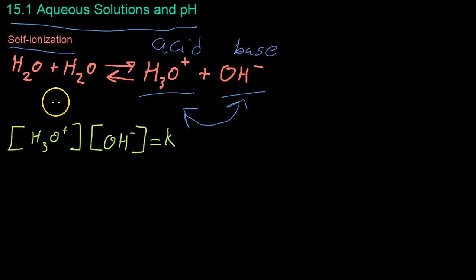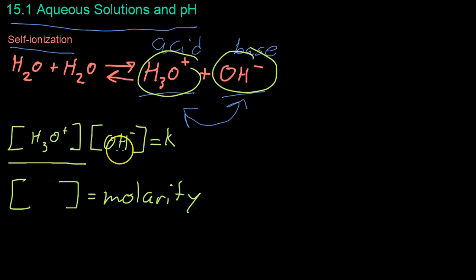Because of this process of self-ionization, there are natural concentrations of hydronium and hydroxide in water. These brackets show the molarity of something. What this statement here is saying is that if you multiply the concentration of hydronium by the concentration of hydroxide, you'll get this K value, which is the ionization constant of water.